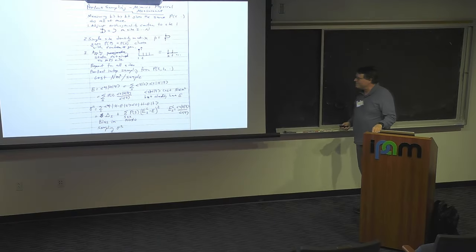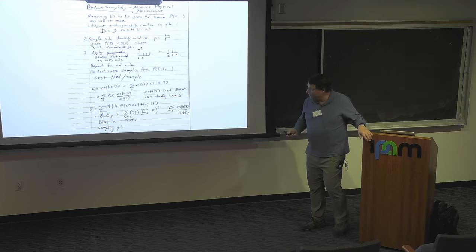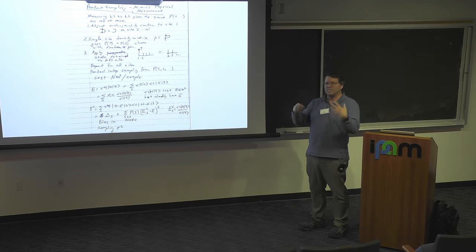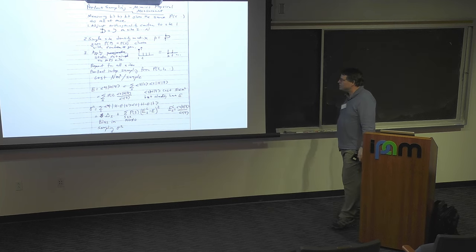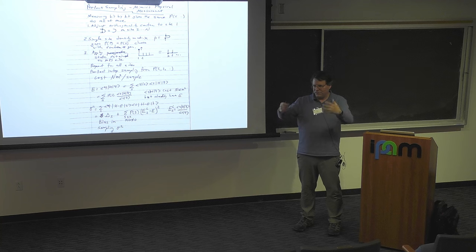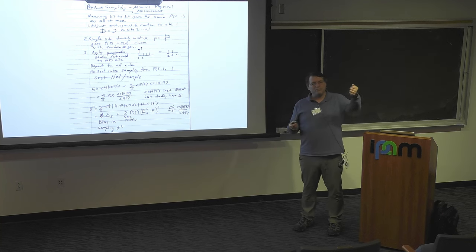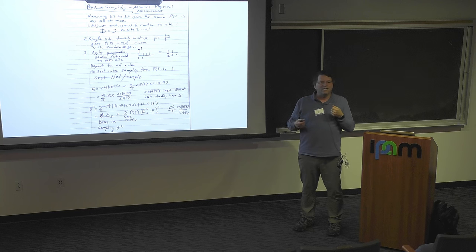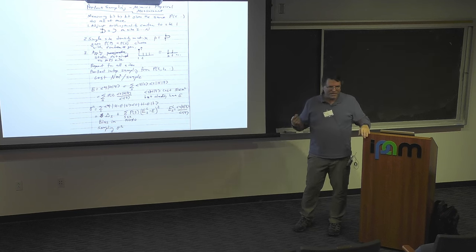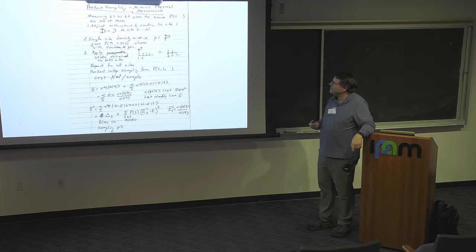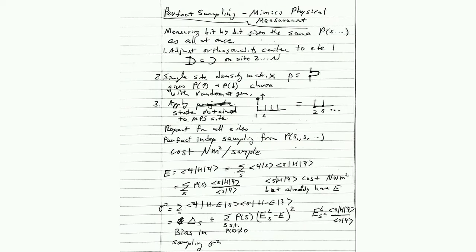But we don't need any Markov chain method because there's something called perfect sampling. It's designed to mimic a physical measurement — something you would do in a laboratory. One of the key things used in quantum computing is: if you measure bit by bit, you get the same thing as if you measure the bits all at once. There's some conditional probabilities — something like the generalized Born measurement rule — and so we can use that and measure bit by bit.